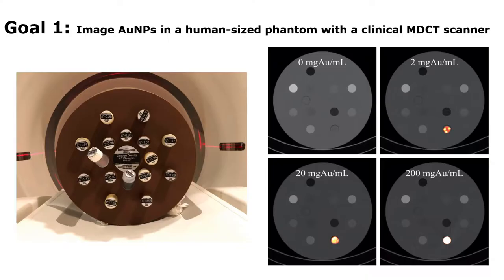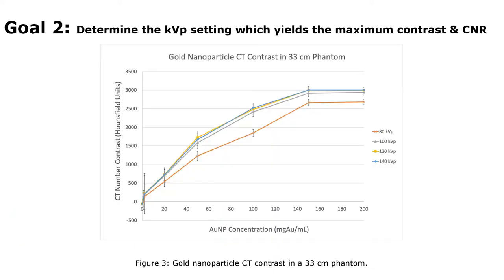Gold nanoparticles were imaged in the GAMMEX RMI-467 electron density phantom, which has a diameter of 33 cm, using a Siemens Somatom Definition AS+. The observed image contrast was generally so extreme in the high concentration regime that the typical 12-bit dynamic range of 4096 was exceeded at 150 mg Au per ml.